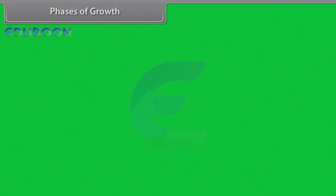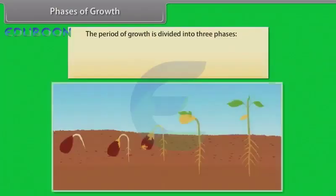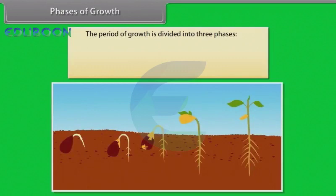Phases of Growth: The period of growth is divided into three phases — meristematic, elongation and maturation.